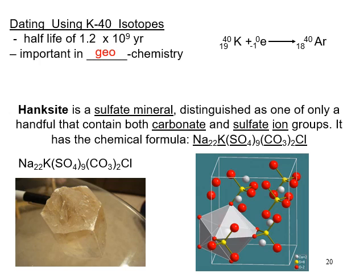Potassium-40 decays to argon-40. One mineral containing potassium is hanksite, a sulfate mineral with a complex formula containing both sulfate and carbonate. If you remember how unit cells work from chapter 11, hanksite has an interesting unit cell structure.